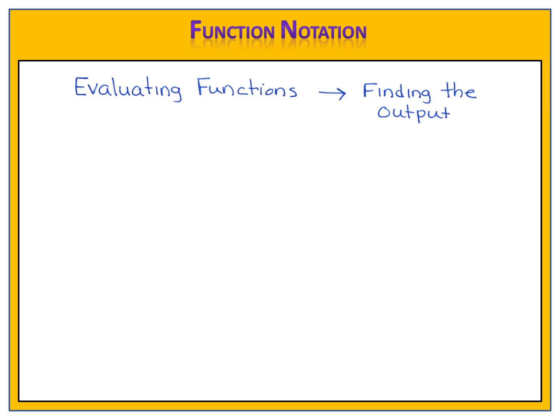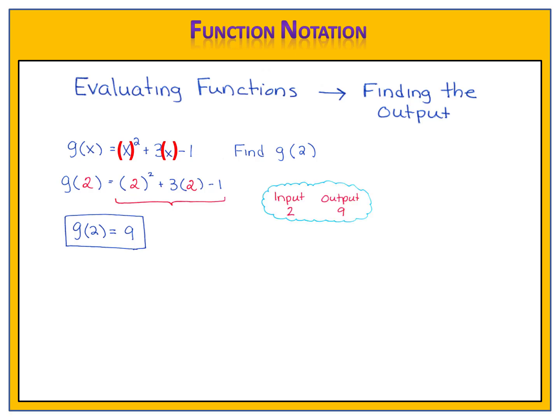Sometimes functions have a variable that appears in more than one place. Here's a new function called g. This function's name is g. And in this one, we have two x's, an x squared and a 3x. We want to find g(2). The steps are the same. The first thing we do is put our x's in parentheses. Next, replace all of the x's with the number 2. Now, evaluate what's on the right-hand side. Again, you could do that by hand, using order of operations. Or you could just type that into your calculator, 9. So g(2) = 9. In function g, when the input is 2, the output is 9.